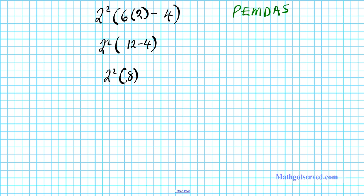Now 2 squared is 4 times 8. We just exponentiated this term — raising 2 to the second power gives 4. Now we can multiply — the last operation left — and we end up with 32. So that's basically how you use the order of operations.